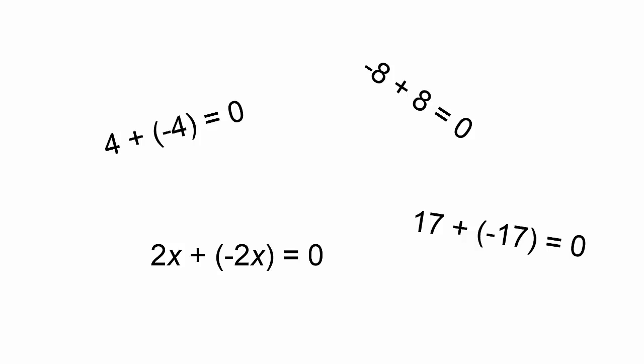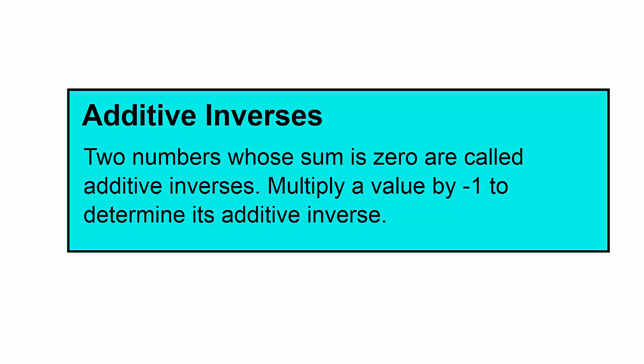In the previous example, we cancelled or removed each negative tile with a positive tile. When solving equations, we use this same idea. When we add any number to its opposite, we get zero. Here are some examples. For this reason, the opposite of a number is called the additive inverse. Two numbers whose sum is zero are called additive inverses. Multiply value by negative 1 to determine its additive inverse.